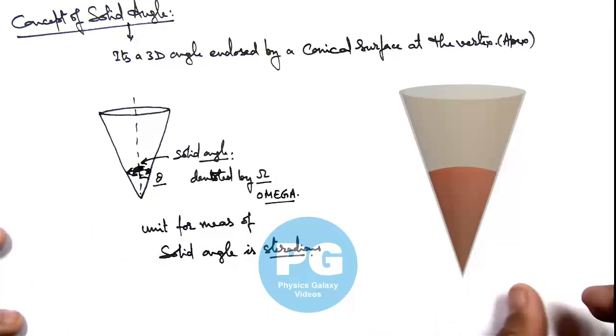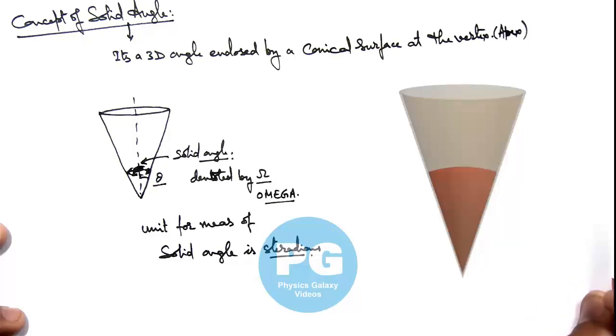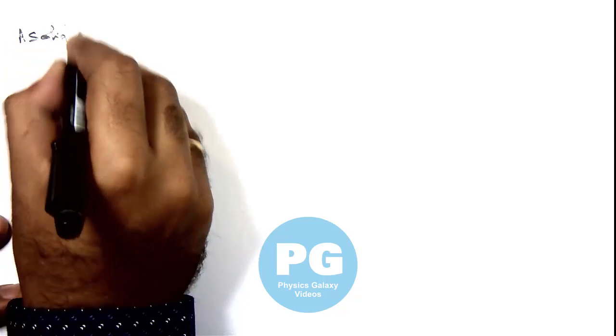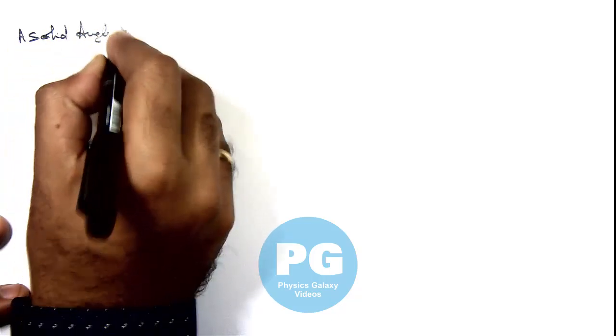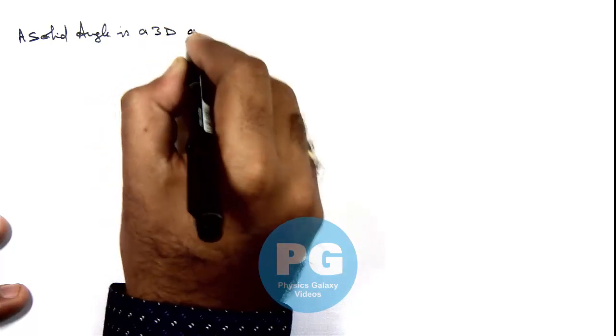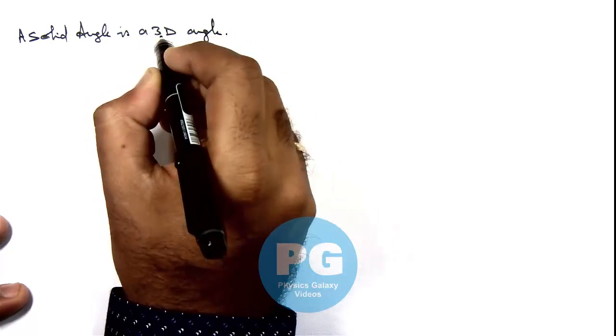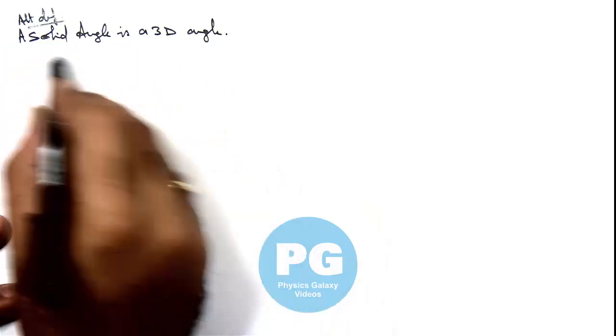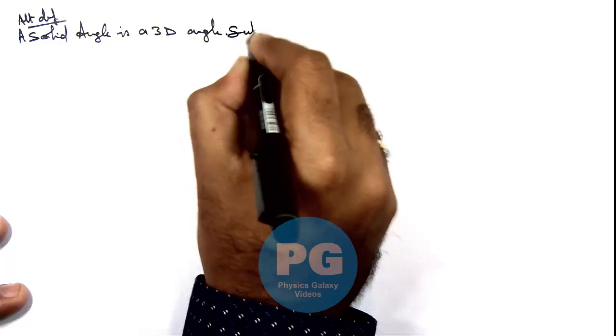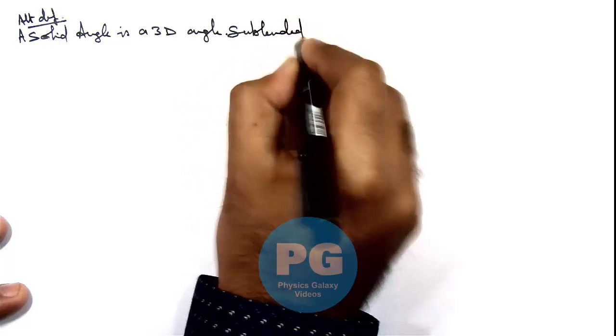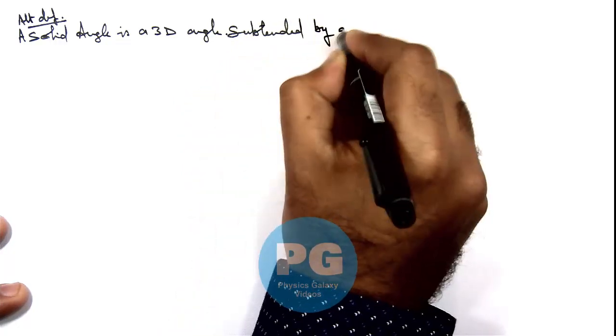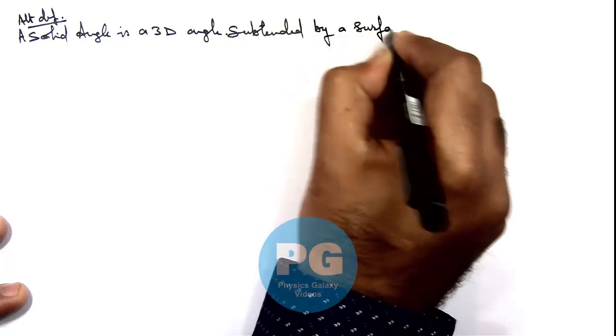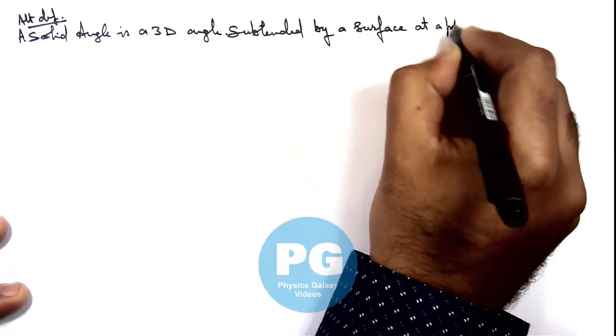We can also define a solid angle in a different way. I am trying to define it in another way. You can also write down this as an alternative definition. A solid angle is a 3D angle subtended by a surface at a point.